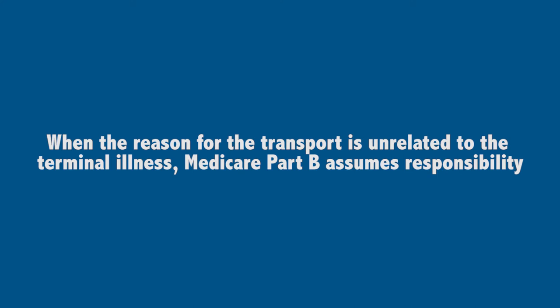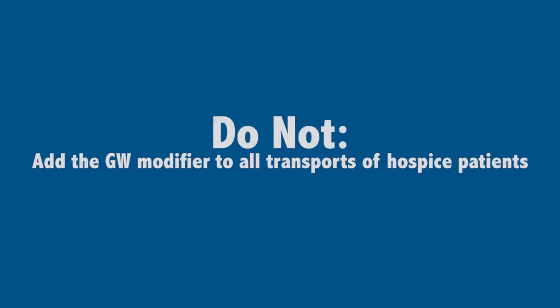This situation creates an exception to this hospice benefit. When the reason for the transport is unrelated to the terminal illness, Medicare Part B — and not the hospice — assumes financial responsibility. Using the GW modifier here tells Medicare that the transport was unrelated to the terminal illness. Adding the GW modifier to simply all transports of all hospice patients is not the proper course of action, because it could improperly trigger Medicare Part B payment when the transport should be billed to hospice. Because Medicare already knows which of its beneficiaries has elected hospice, using that GW allows for Medicare payment to go through.